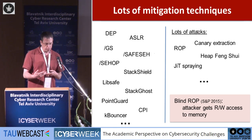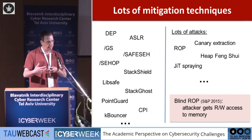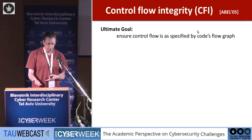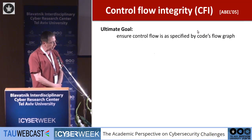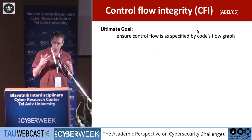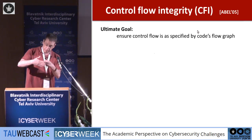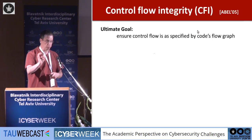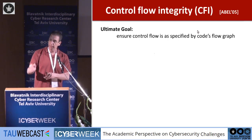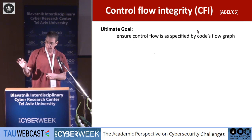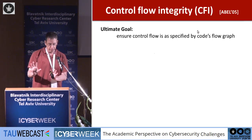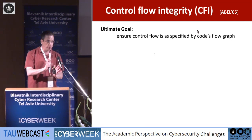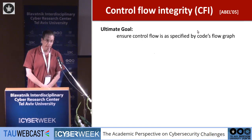Rather than a cat-and-mouse game, you'd like to have a more rigorous and robust defense mechanism against these control hijacking attacks. There's this beautiful idea called control flow integrity, introduced by Abadi et al. back in 2005. The ultimate goal of control flow integrity is to ensure that as program execution continues, the program follows exactly the control flow path dictated by the code. The attacker, even though he might try to mount a control hijacking attack, can never get the program to deviate from its intended control flow.